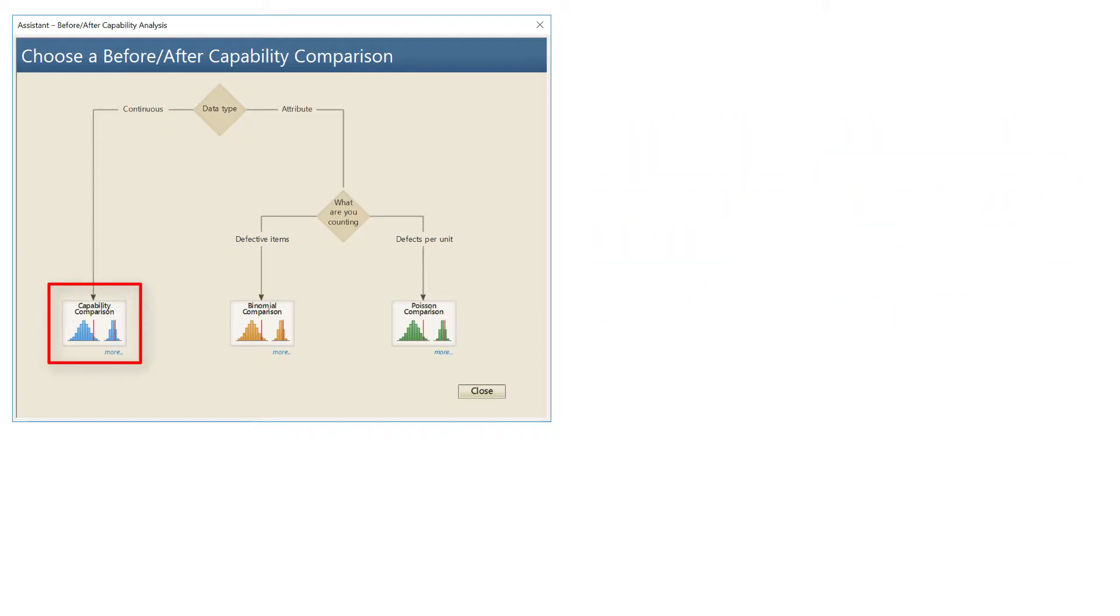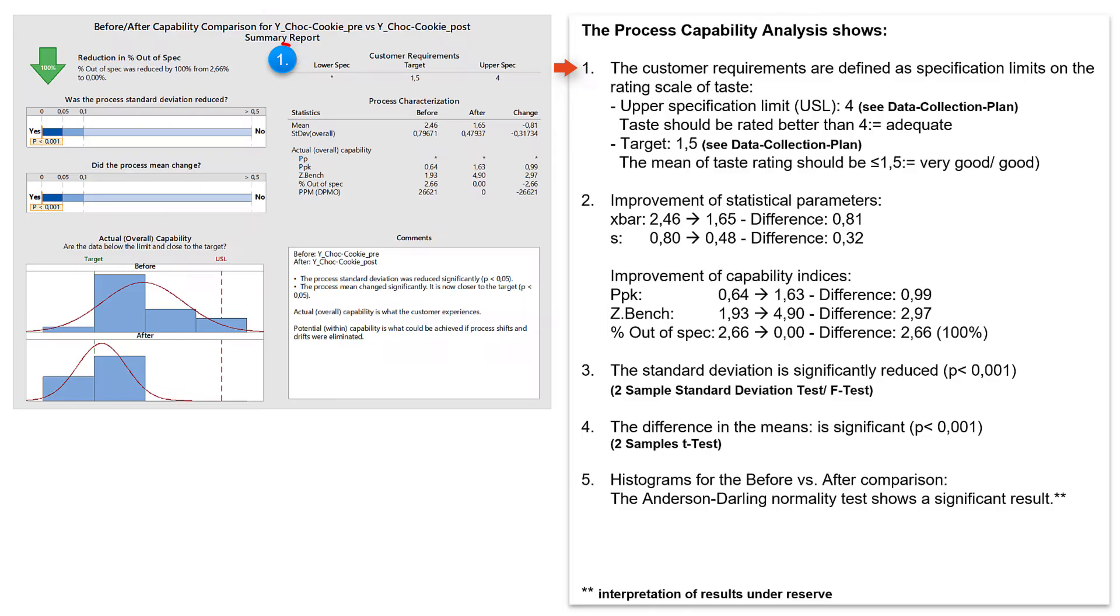I select the before-after capability analysis of the Minitab Assistant. The specified target as well as the specification limits are of course the same for this comparison.